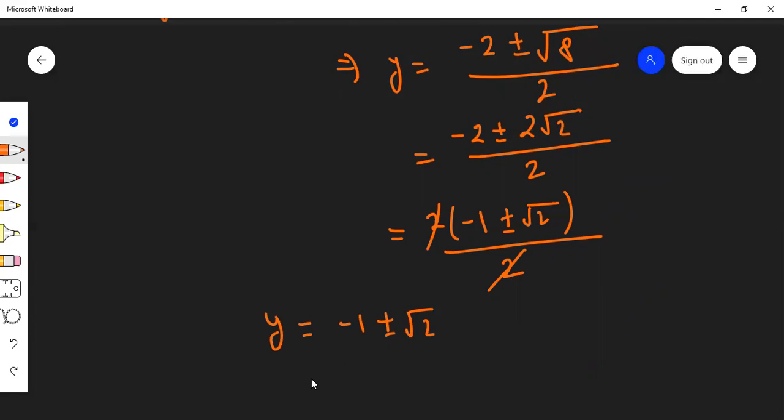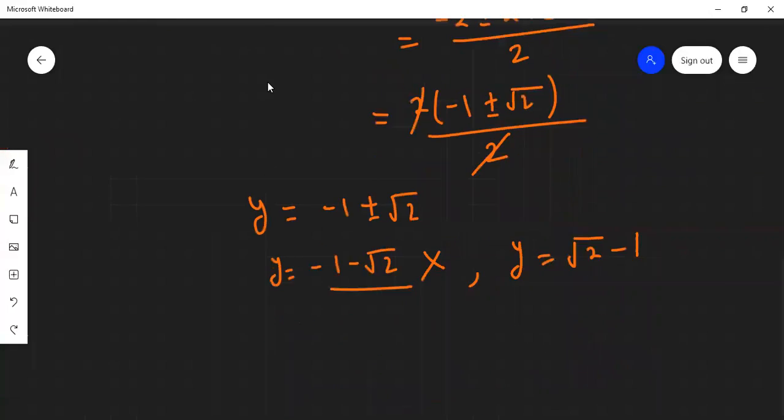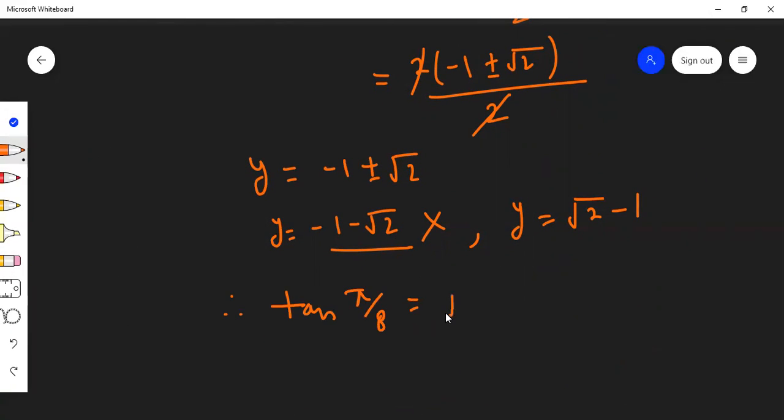We get two answers: y = -1 - √2 and y = -1 + √2. The first value is negative, which is not possible because π/8 is in the first quadrant where tangent is positive. Therefore, y = √2 - 1. So tan(π/8) = √2 - 1, which is what we were asked to find.